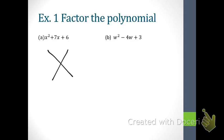We draw our X and immediately focus on the signs — everything else hinges on the signs. Which sign in the original problem are we supposed to look at first? Highlight the second sign. The second sign in this problem is positive, so our signs are going to be the same. We have to figure out if they're both positive or both negative by looking back at the first sign. Draw yourself an arrow back to the first sign. We see they're both going to be positive, so we fill in a positive sign on both sides of the X.